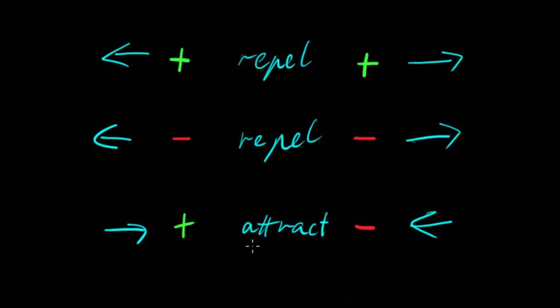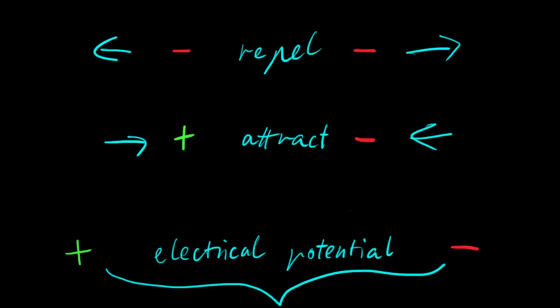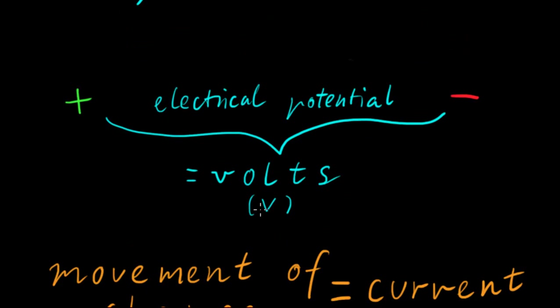And in a physics definition, we say that they have the potential to do work. And because of this, we say that they have an electrical potential, which we can measure in volts.